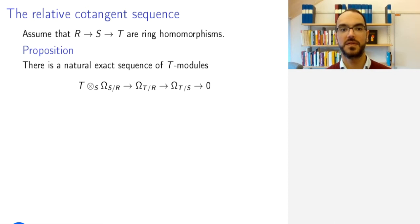The first one is the so-called relative cotangent sequence, and this will have a geometric meaning that we'll discuss in a minute.